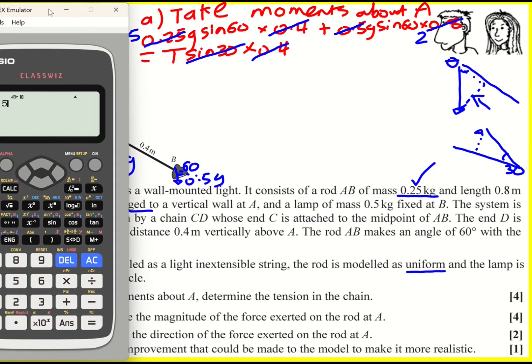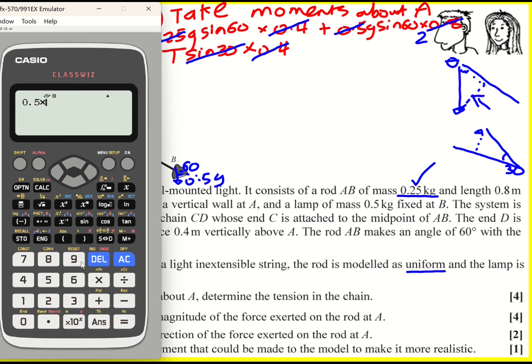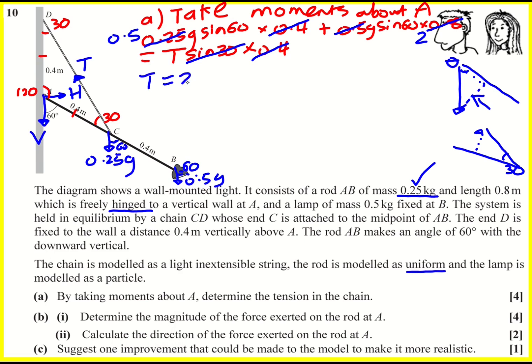So 0.5G times sine 60. And we get, we'll get an exact answer, but 21.217. Or 21.2 newtons. Okay, good start here.